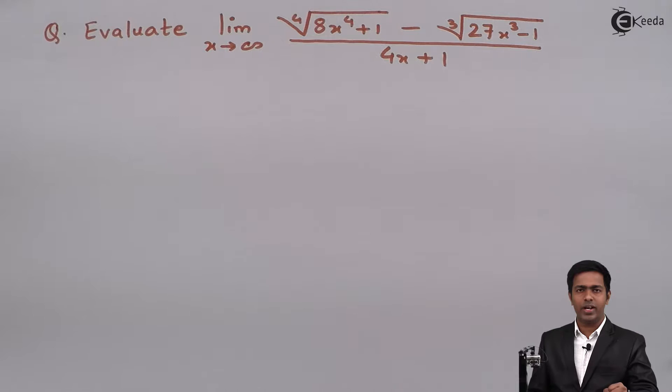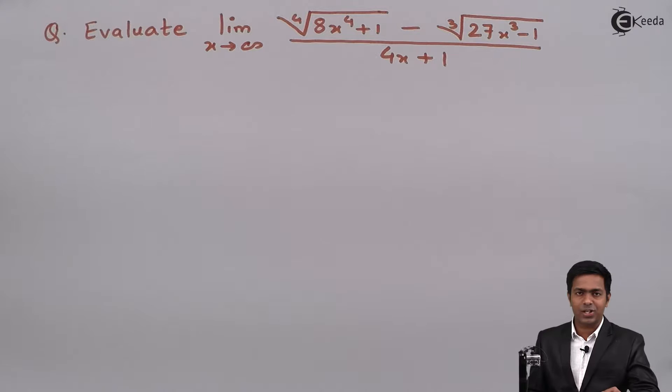Hello friends. In this problem we have to evaluate the limit as x tends to infinity of 4th root of (8x⁴ + 1) minus cube root of (27x³ - 1), all divided by (4x + 1).